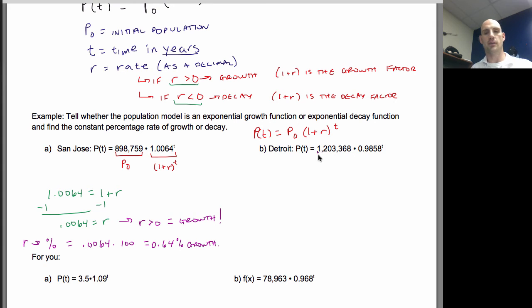For Detroit, let's look at it. Again, P sub 0 is here. This is 1 plus R to the T. And so 0.9858 is equal to 1 plus R. So I'll subtract 1. So when I do this subtraction here, I get negative 0.0142 is equal to R. Because it's negative, that means it's decay. And because it's decay, well, not because it's decay, it is decay. So what does that mean as a percent? If I move my decimal place two places to the right, I've got negative 1.42 percent decay. So my decay rate is 1.42 percent.